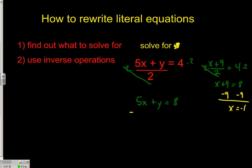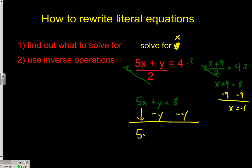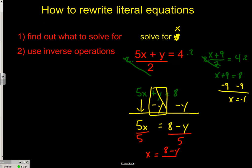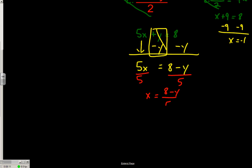Here we want to solve for x. Let's get x all by itself. So minus y on both sides — pull down positive 5x, y minus y is nothing, and then we have equals 8 minus y. How can we get the x by itself? Now we just have to divide both sides by 5. And we're done: x equals 8 minus y divided by 5.